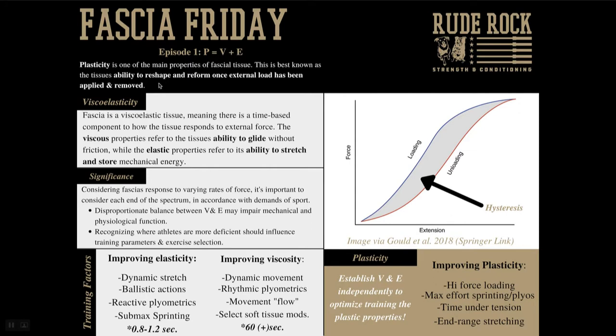If we combine the two variables, we get viscoelasticity. This essentially suggests that there is a time-based response to force application for fascia. If we apply something in a slow, controlled manner, there's a certain response. And if we move in more of a ballistic or elastic fashion, there is a different response to the fascial tissue.